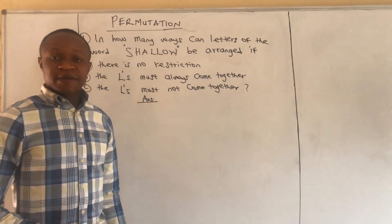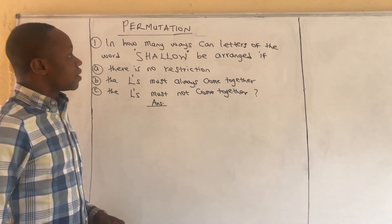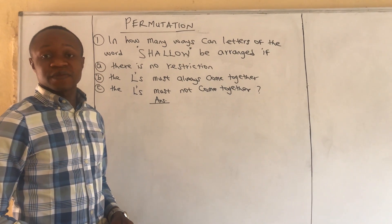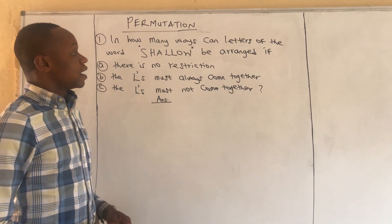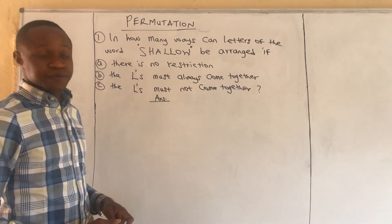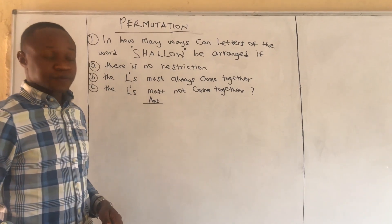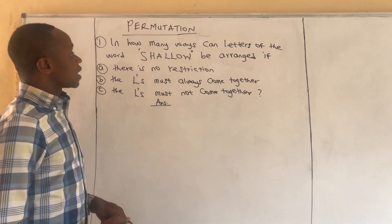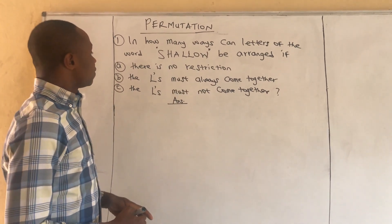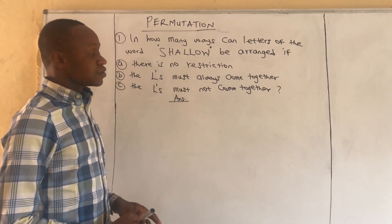We have examples on permutation where we arrange letters or items, and in this case some of the letters are indistinguishable or are repeated. We take the first question: in how many ways can letters of the word 'shallow' be arranged if, for the first part of the question, there is no restriction.